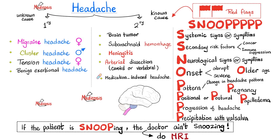Please recall the red flags of headache. The mnemonic is SNOOPS — double S, double O, and lots of Ps. Systemic signs and symptoms such as fever, nuchal rigidity, positive Kernig's sign, positive Brudzinski sign — all of these are red flags.